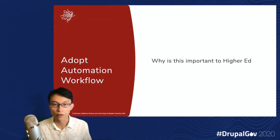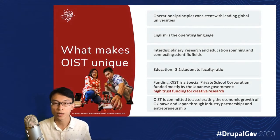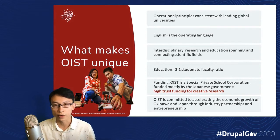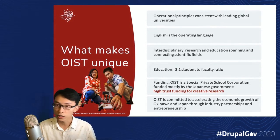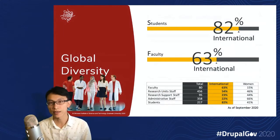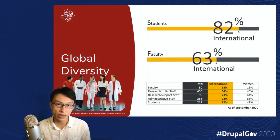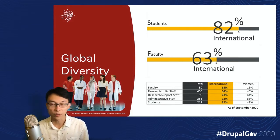I began to think about implementing an automation workflow into the organization for some reasons. Allow me to give you some background of our university. OIST is a unique university in Japan. It is nationally funded directly by the Japanese cabinet office. We offer only PhD education with cross-field research and education. Although it is in Japan, English is the operating language, including all instructions. We have 40% international members in OIST, and every year we bring excellent faculty and students from around the world.